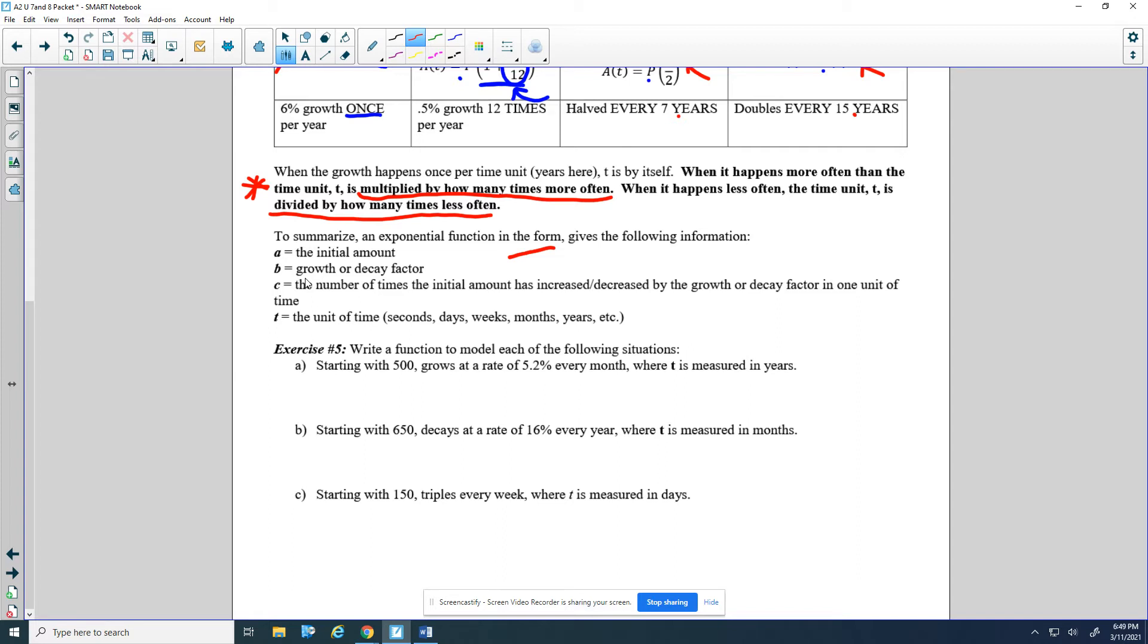We're going to read these situations, write a function to model each of the following situations. If we start with 500, we grow at a rate of 5.2% every month, but t is measured in years. So if I say 5.2% every month, that's 12 times a year. So I'm going to write my base, 1.052, increasing, so we just added it on.